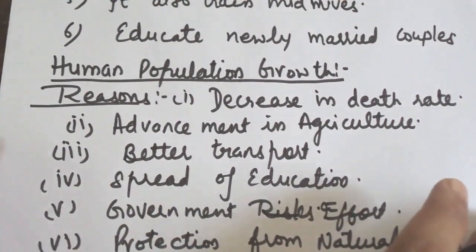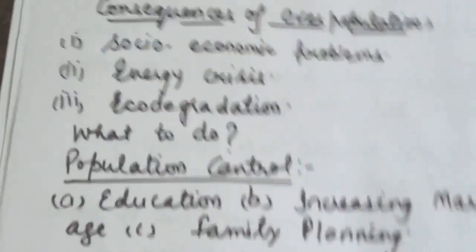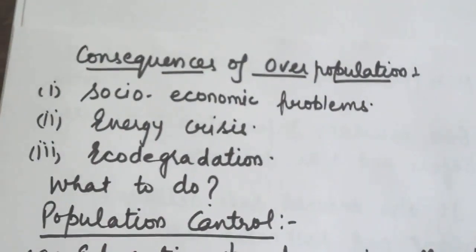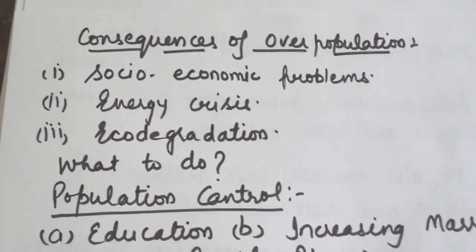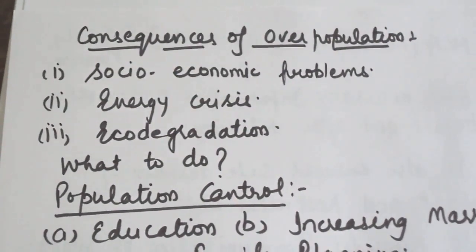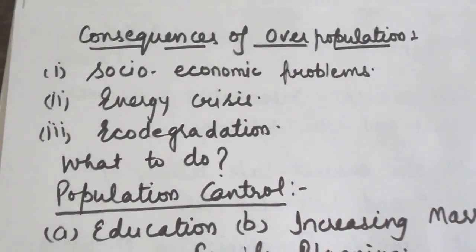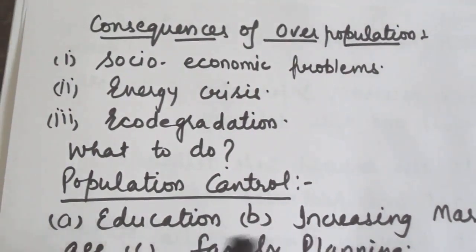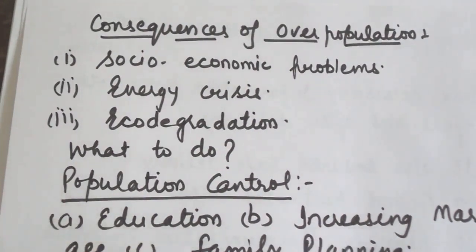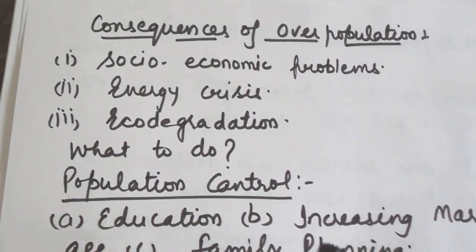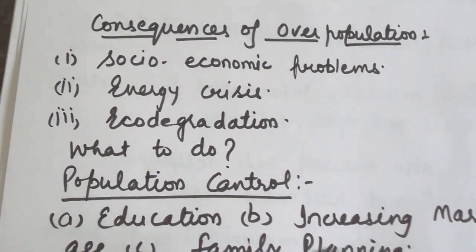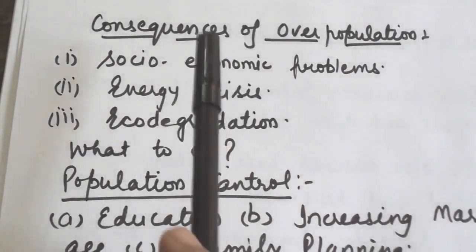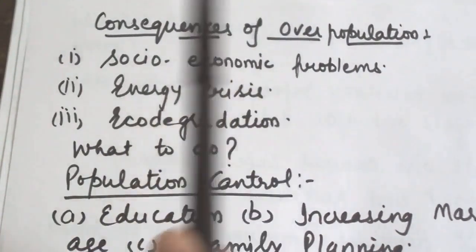Next are the consequences of overpopulation. Overpopulation has certain serious problems like depletion of natural resources, various socio-economic problems, energy crisis and eco-degradation. Number one is socio-economic problems. Various socio-economic problems are created by overpopulation.